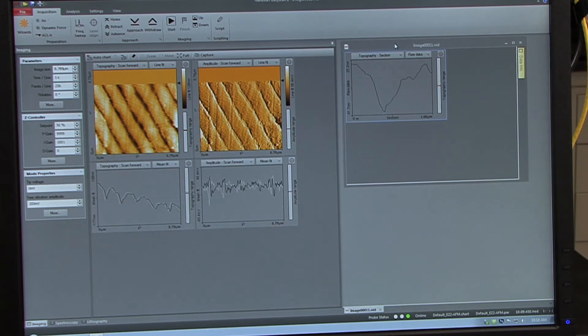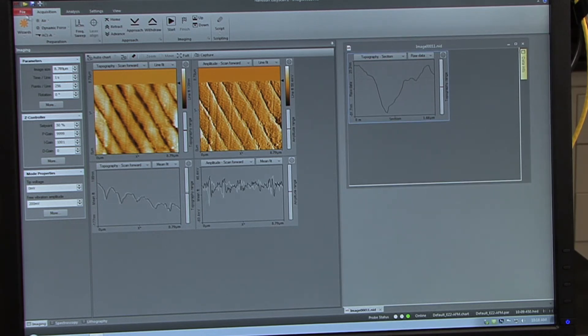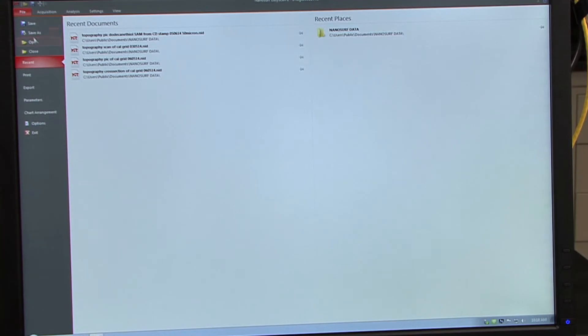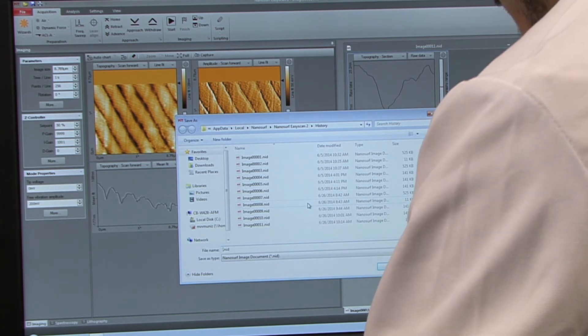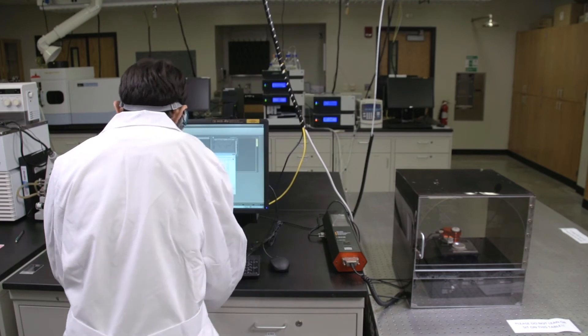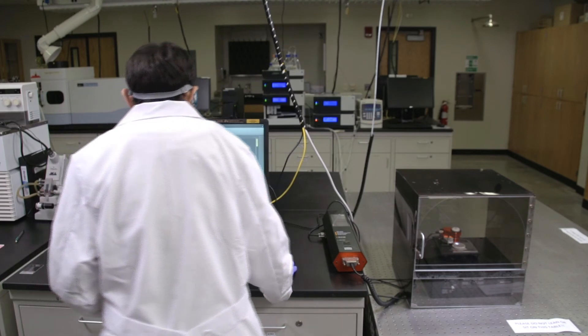Once you've obtained the cross sectional image, you'll want to go to file, save as, and title the NID file based on the particular alkane thiol you've imaged. And click save.